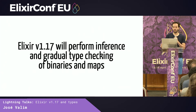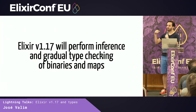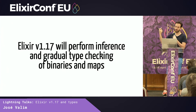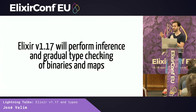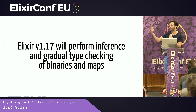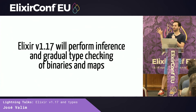For Elixir 1.17, we will perform inference and gradual type checking of binaries and maps. Every time you have a binary or are pattern matching on a map or accessing a map field, we perform inference and type checking on that. We will say, oh, you are trying to get a field that does not exist, or you are trying to put something into a binary that we know is a string but you told us it's an integer. The goal is to find obvious mistakes in your code.